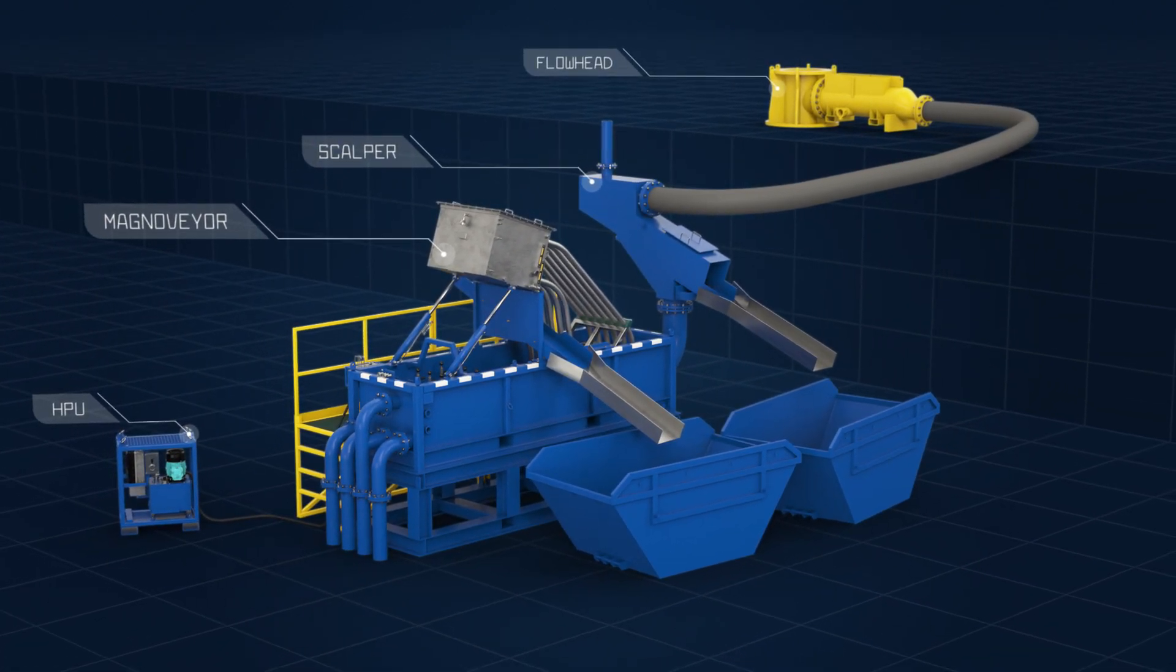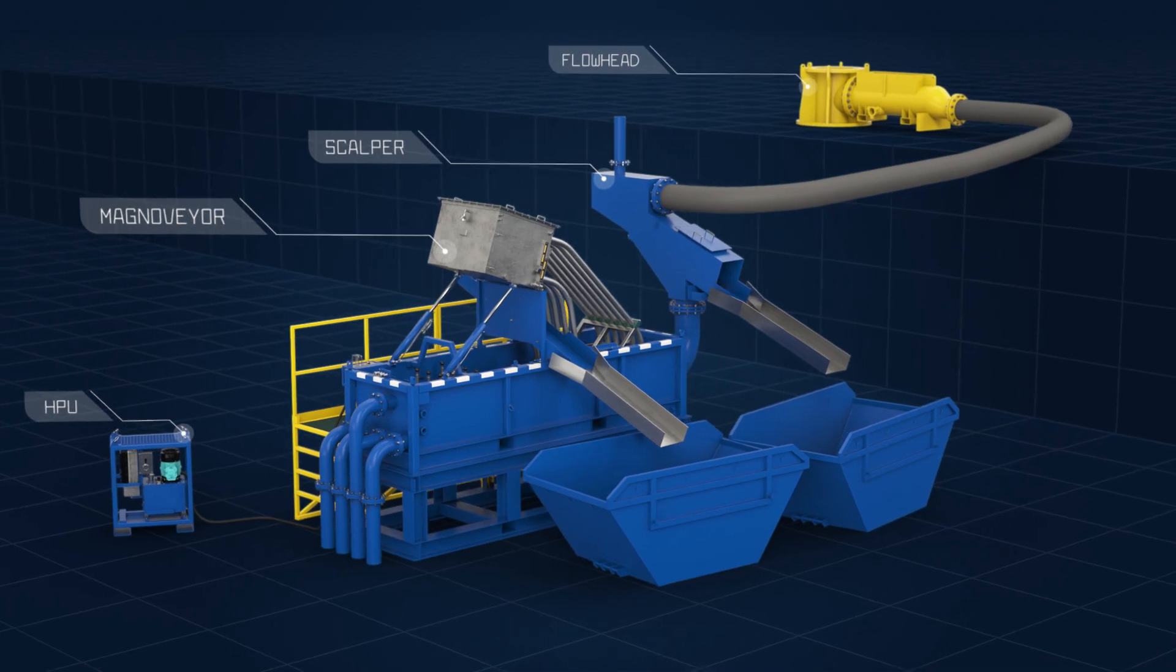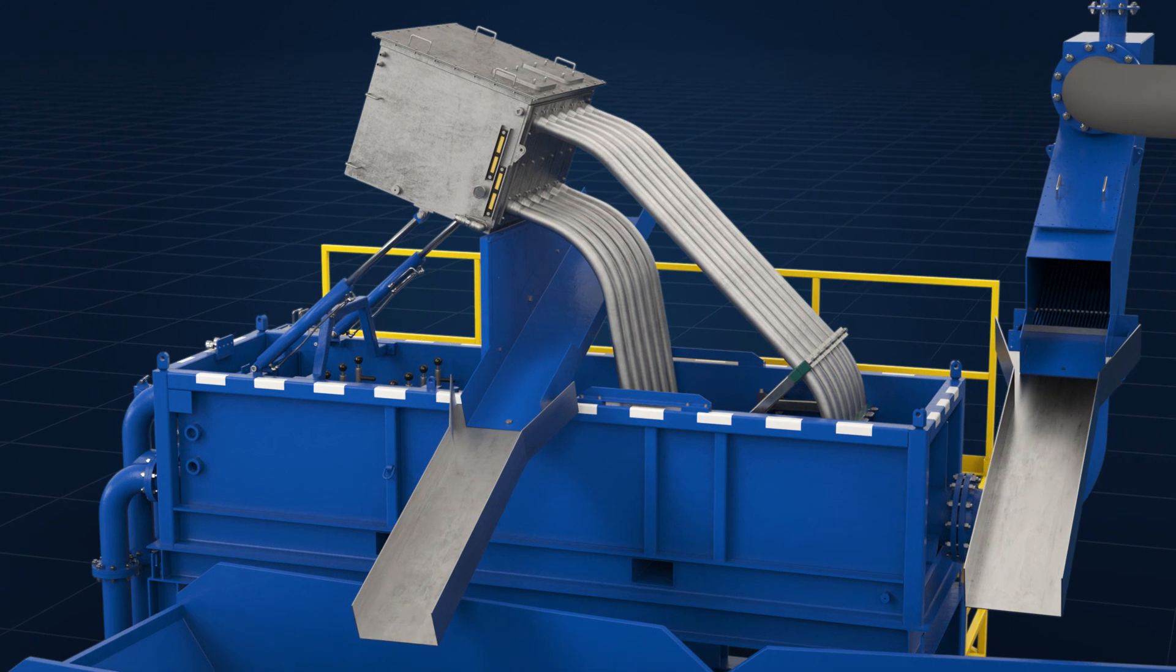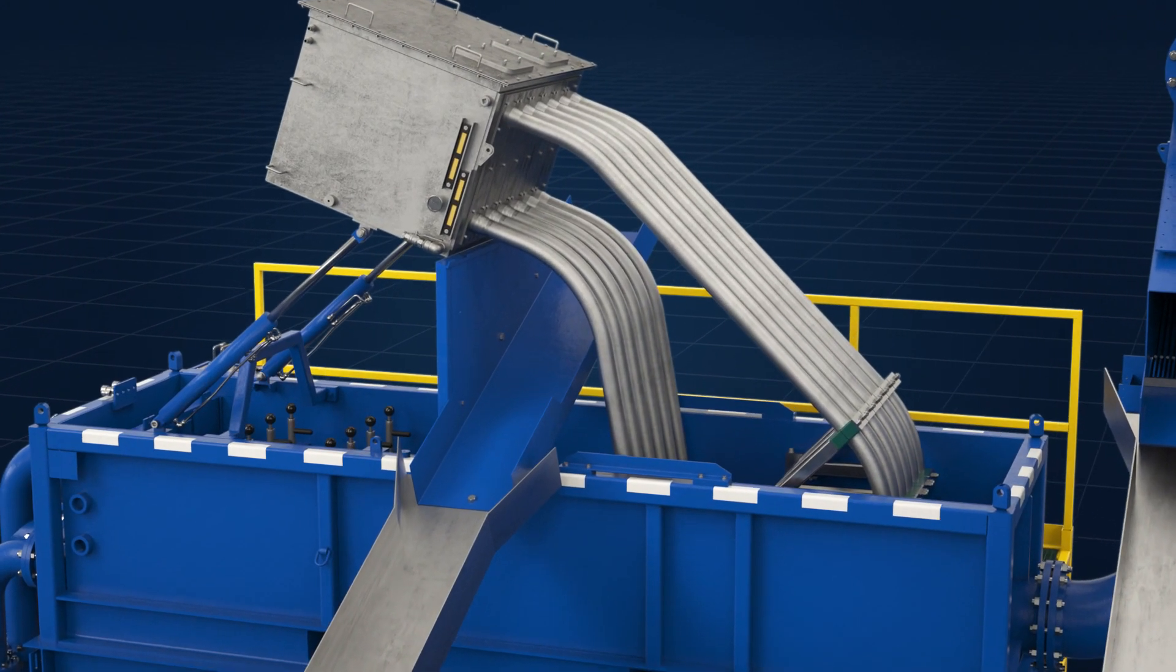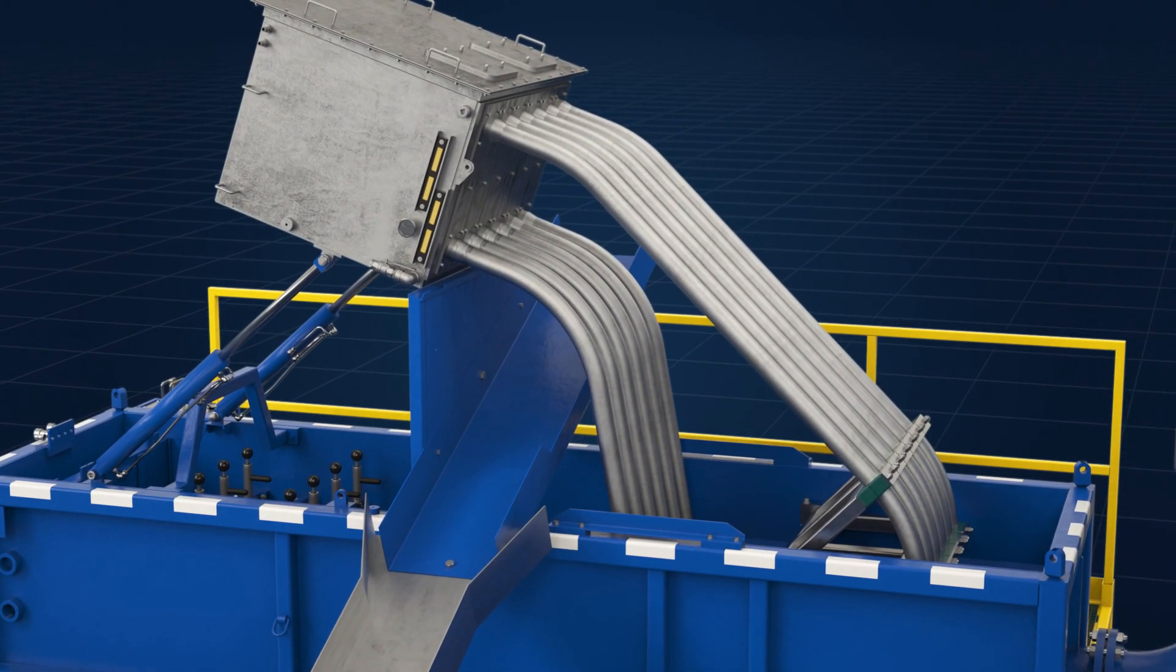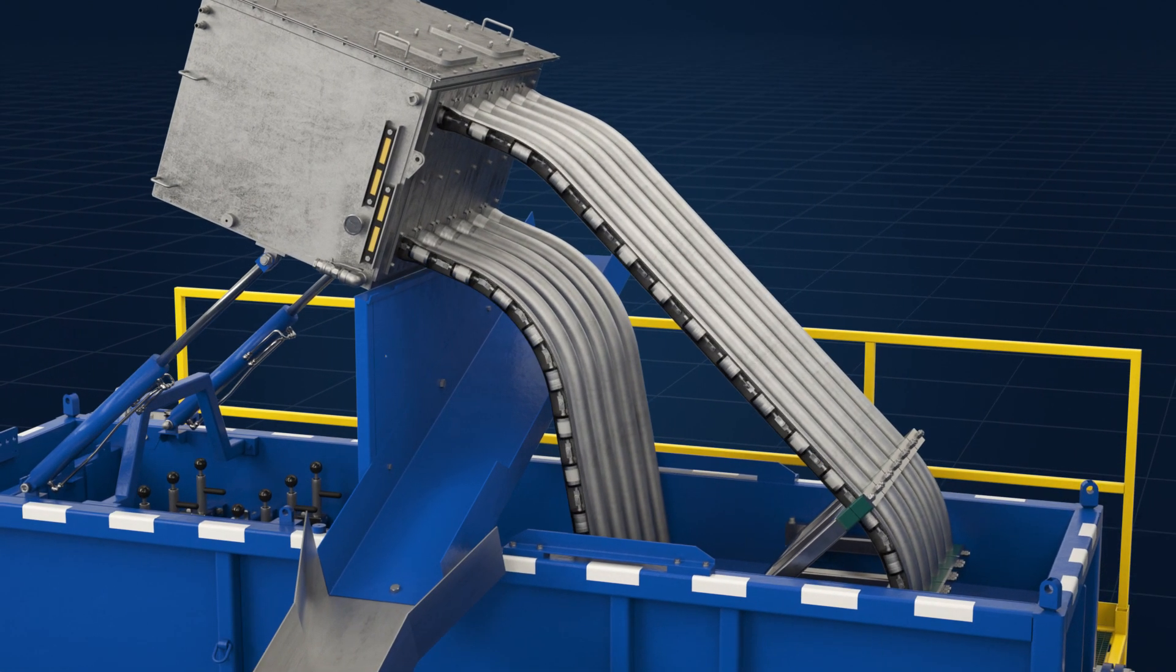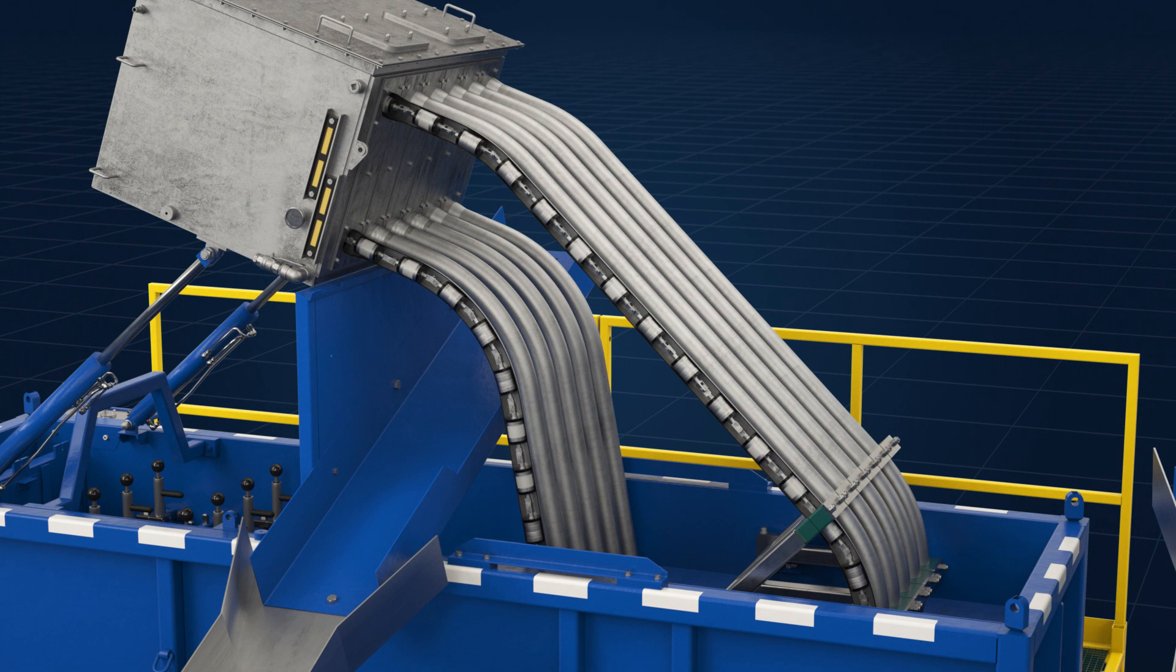At the heart of Romar's revolutionary swarf handling system lies the chain link Magnavair unit. The Magnavair comprises a vertical array of pipe loops arranged side by side. Each pipe loop contains a chain of high-powered magnets.